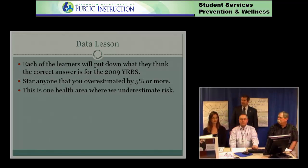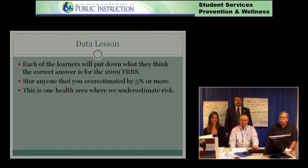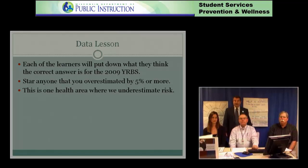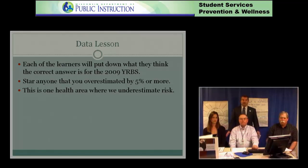Julie, how many did you overestimate? I also overestimated by one. And Randy? Unfortunately, I overestimated all five. Research on this issue says that in terms of a lot of health issues, we tend to overestimate risk — both students we teach as well as adults — except in one area: mental health related issues. So I wasn't really surprised to see Mark and Julie have very low numbers. I was a little surprised that Randy had five. But everybody responds differently based on their experiences and the things they've heard.